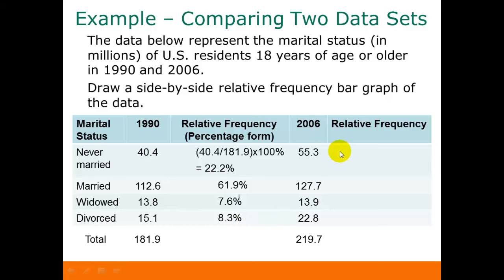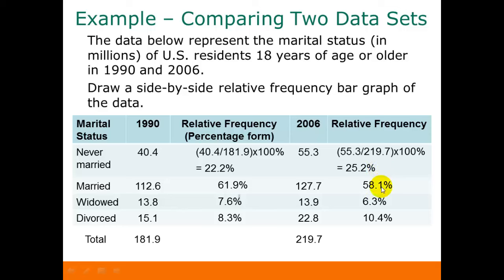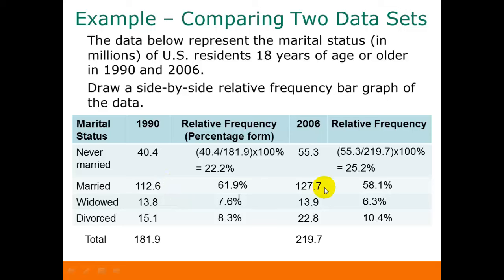For 2006, instead of dividing by 181.9, we divide by the total for that year, which was 219.7. Our relative frequency for never married in percentage form is 25.2%. Looking at the relative frequencies gives us a different picture — if we looked at the regular frequencies, it appeared that widowed had increased slightly from 1990 to 2006, which it did in actual count, but as a percentage it actually decreased from 7.6% down to 6.3%. Similarly, the married category increased in actual numbers from 112.6 million to 127.7 million, but the percentage of the total decreased from 61.9% down to 58.1%.